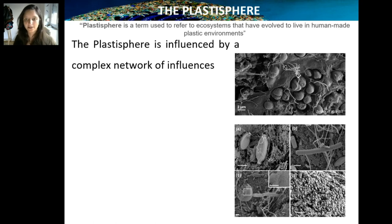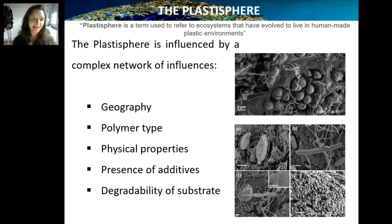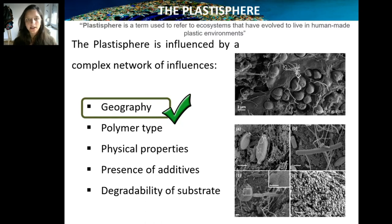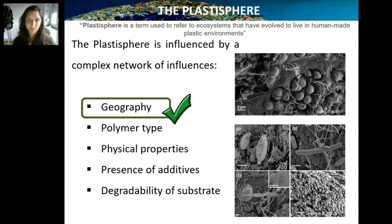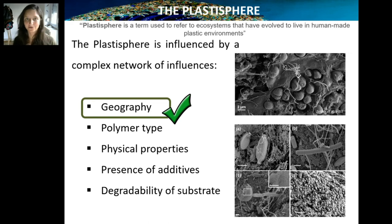One of the first things we need to understand before reaching conclusions on how the plastosphere affects plastics in the ocean is: what are the factors that influence this community, its development and its structure? It's not that simple — it's not one or two factors affecting communities everywhere the same. Usually like any other community, it's affected by a complex network of factors. For example, geography is an important one — plastics collected from different water masses have plastospheres with different communities.